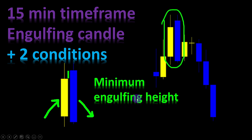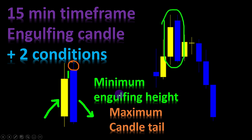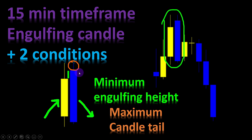The second condition is the maximum candle tail, also left as an adjustable variable. We need a certain engulfing height and a limited tail length that is less than the maximum candle tail parameter. This explanation covers the bearish engulfing candle; for the bullish engulfing candle, the engulfing distance and the lower tail of the engulfing candle are checked instead. Adding too many conditions would decrease the frequency of our signals.